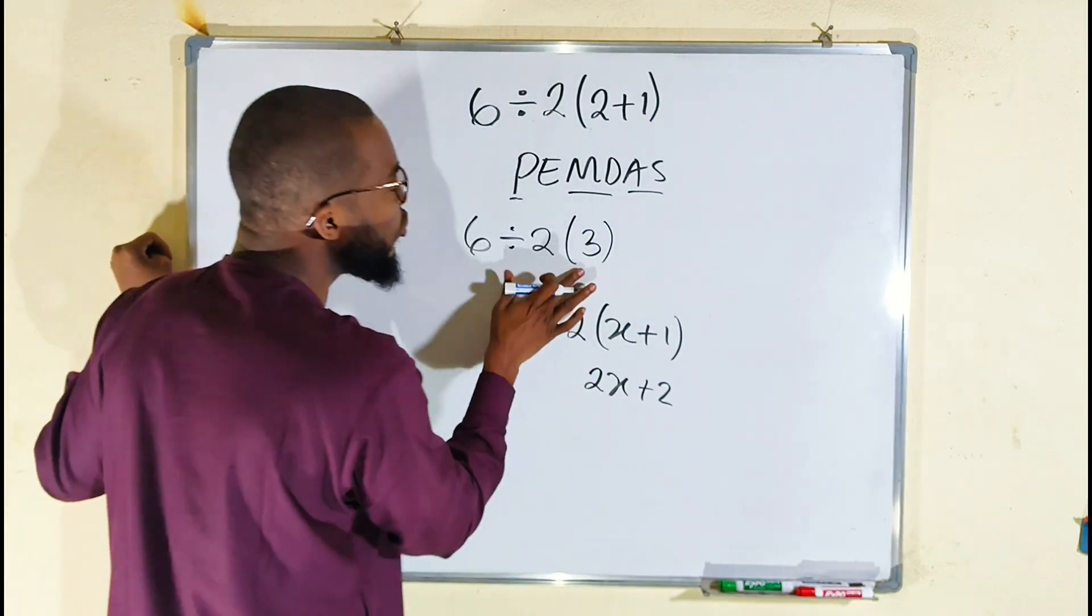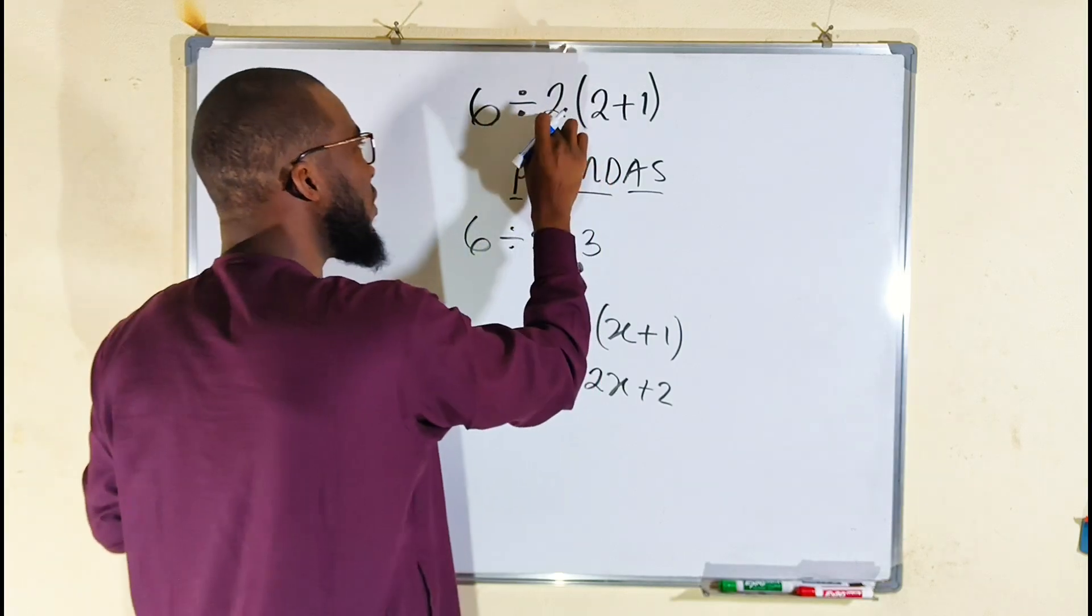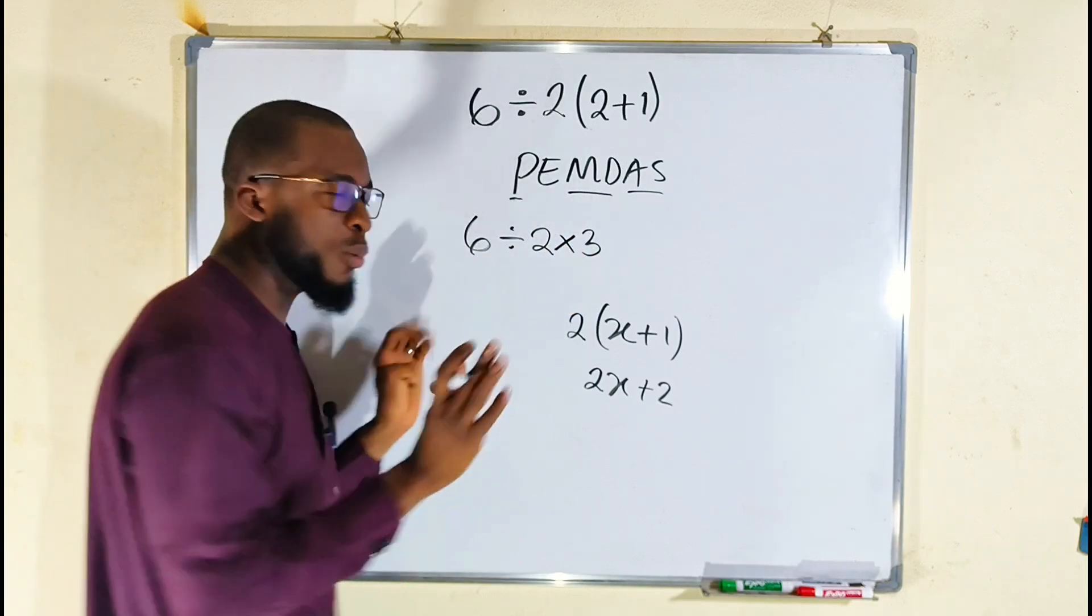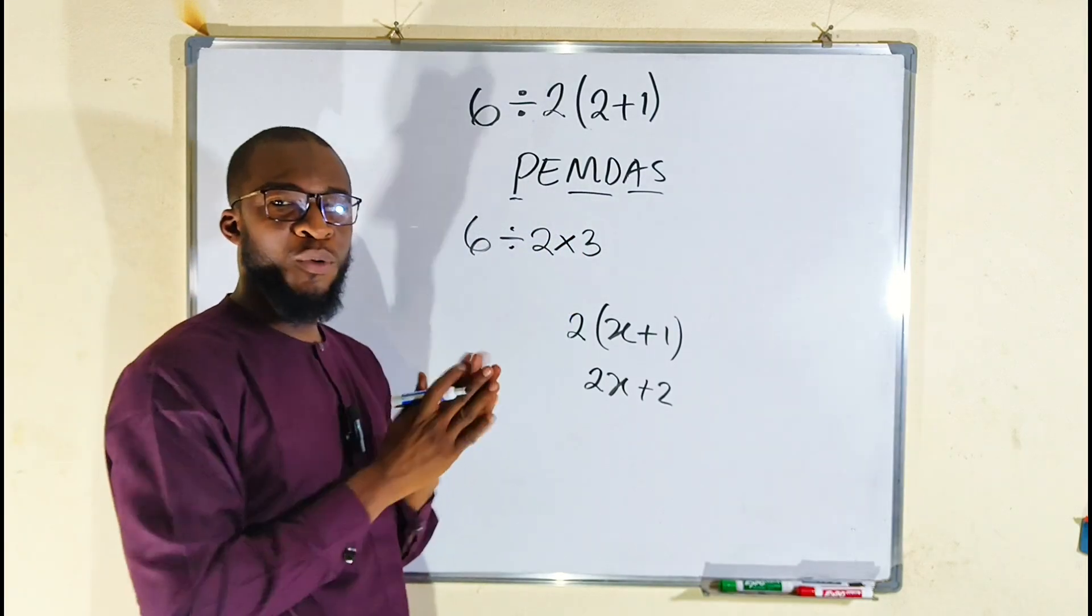So we have finished dealing with our parenthesis. So you can confidently remove it. Because the relationship between the number outside and the parenthesis is multiplication. Just replace it with multiplication.